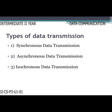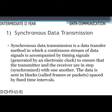There are three types of data transmission: synchronous, asynchronous, and isochronous. Synchronous data transmission is a method in which a continuous stream of data signals is accompanied by timing signals generated by an electronic clock, ensuring that the transmitter and receiver are synchronized. The data is sent in blocks called frames or packets, spaced by fixed time intervals.